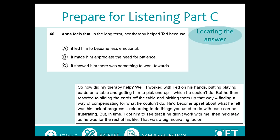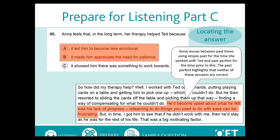Like Part B, it is also good to listen to check the other options are incorrect. In this example, the use of the past perfect tense that Anna uses to describe Ted's situation before she met him makes these options incorrect. They are mentioned, but they do not answer the question, which is how Anna's therapy helped Ted.